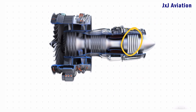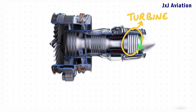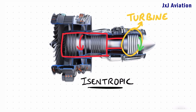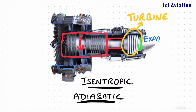The hot gas is passed through the turbine stages, where the air causes the turbine to rotate. The turbine is connected to the compressor on the same shaft, so the turbine rotates the compressor. This is an isentropic and an adiabatic process. The gases undergo some expansion in the turbine stages, where the pressure decreases along with the temperature.